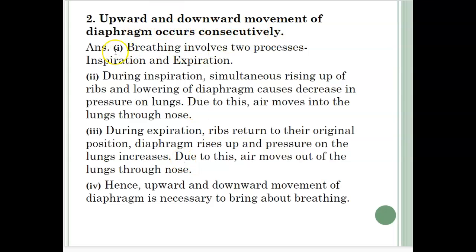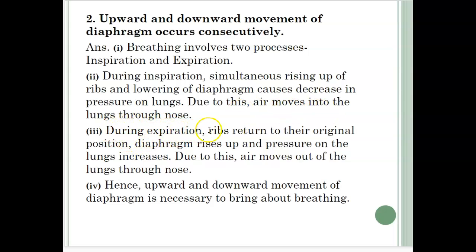Upward and downward movement of the diaphragm occurs consecutively. Breathing involves two processes: inspiration and expiration. During inspiration, simultaneous rising up of ribs and lowering of the diaphragm causes decrease in pressure on lungs. Due to this, air moves into the lungs through the nose. During expiration, ribs return to their original position. The diaphragm rises up and pressure on the lungs increases. Due to this, air moves out of the lungs through the nose. Hence, upward and downward movement of the diaphragm is necessary to bring about breathing.